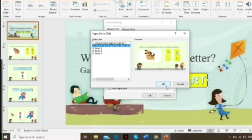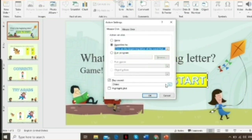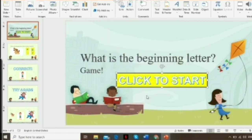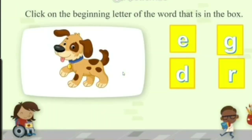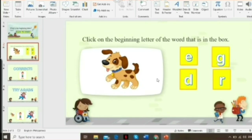After clicking OK, it will lead you back to the Action Settings. There you can see options like 'Play Sound' — choose the sound you like, then click OK. Let's try it: click 'Click to Start' and it leads us to the first item on slide two.